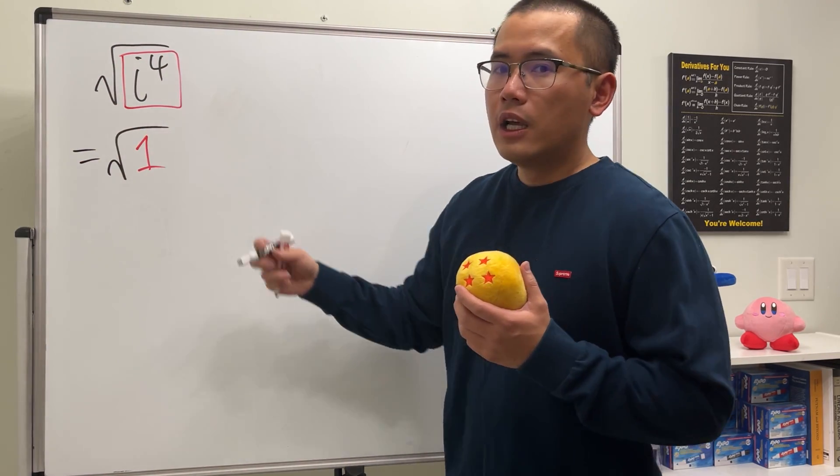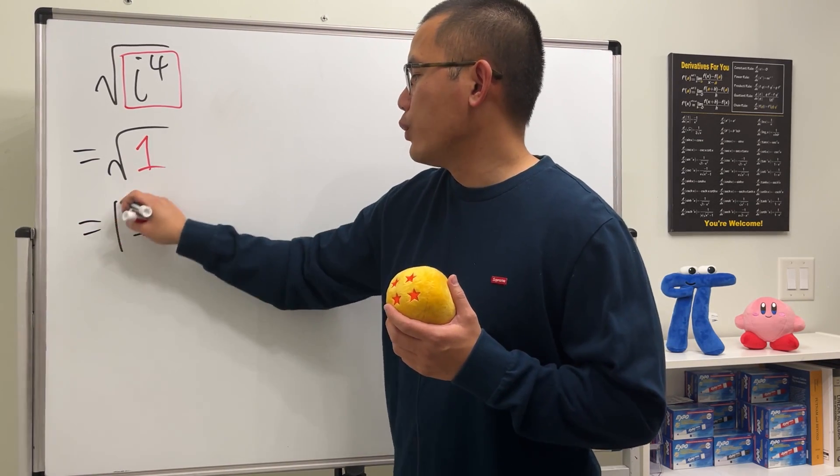And then we take the square root of that. Square root of positive 1 right here will just give you 1. And then we are done.